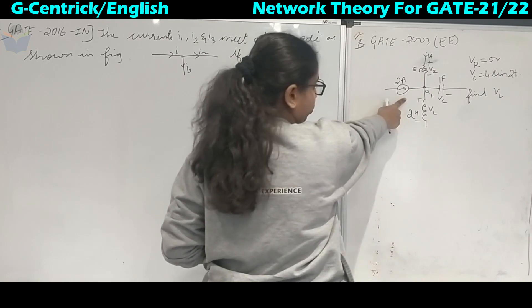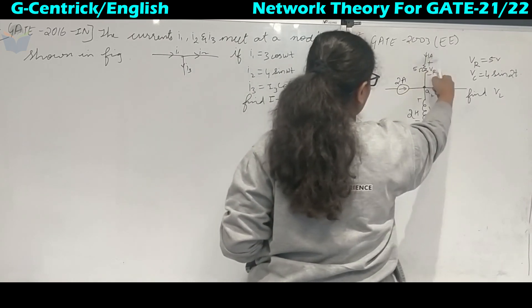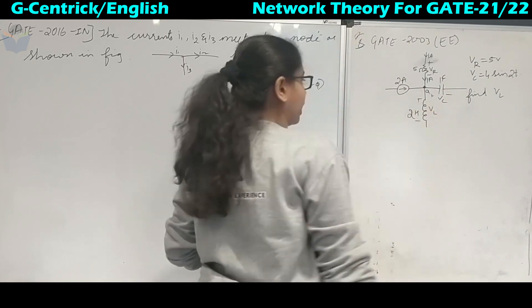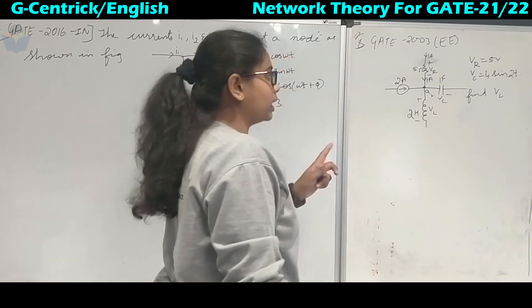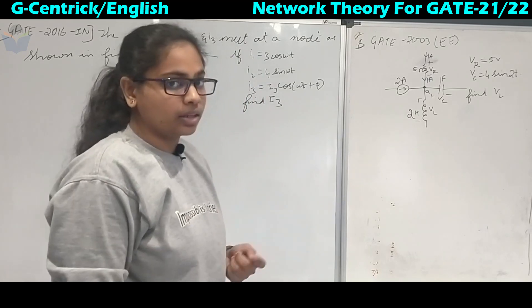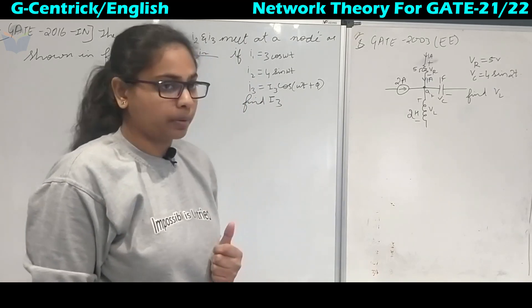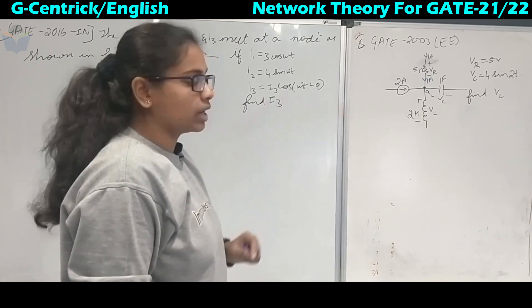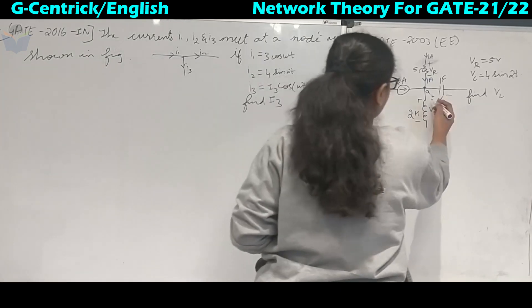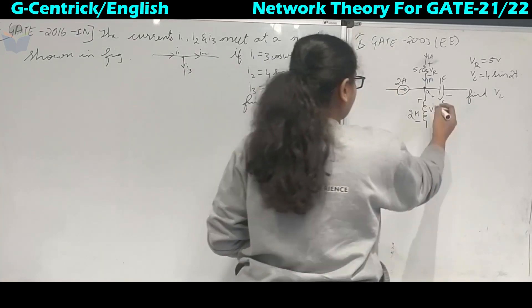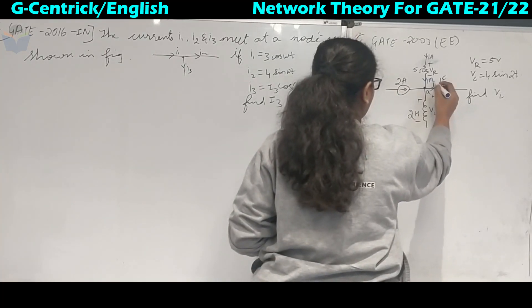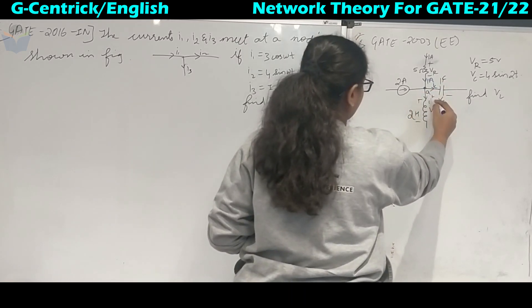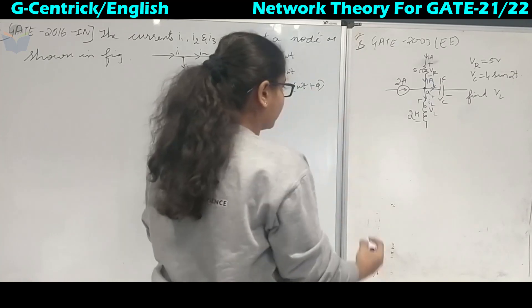The direction of the 2 ampere current is known, and the direction for the 1 ampere is also known. However, the direction for the capacitor and inductor has not been given. Since capacitor and inductor are energy-absorbing elements, they are passive, so the current enters at the positive terminal. The positive and negative sign of the voltage has already been given, so we can write the current directions accordingly. Here also it is IL.